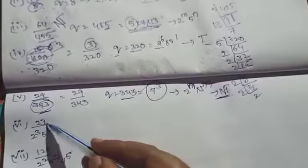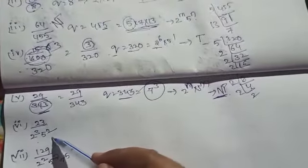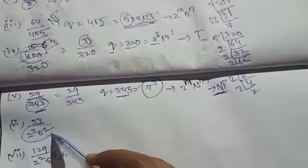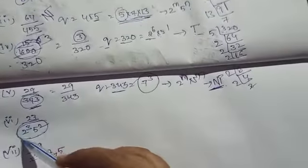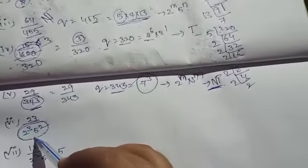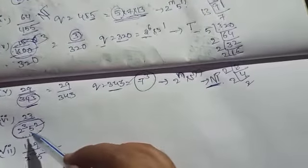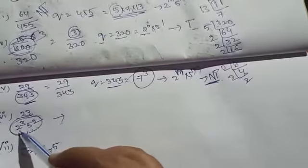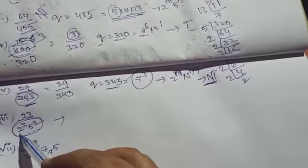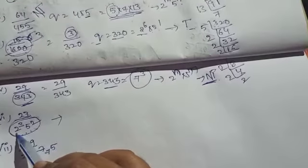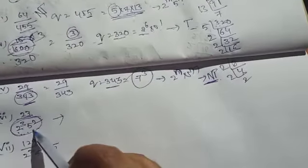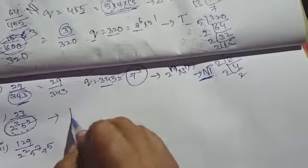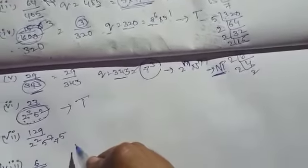Next question: 23 by 2 cube 5 square. So it is already in the form of 2 power n into 5 power n, where q is 2 power n into 5 power n. So it is a terminating decimal.